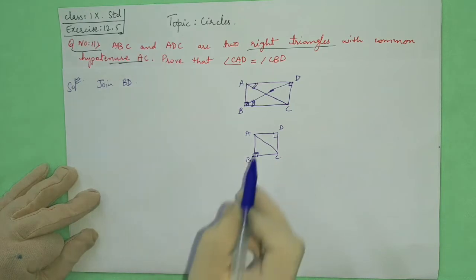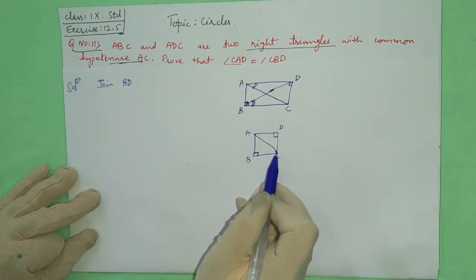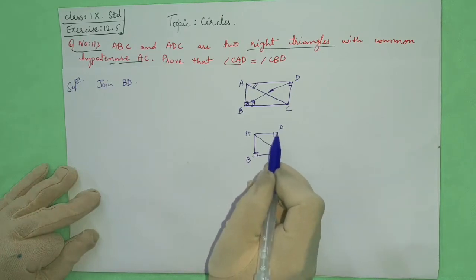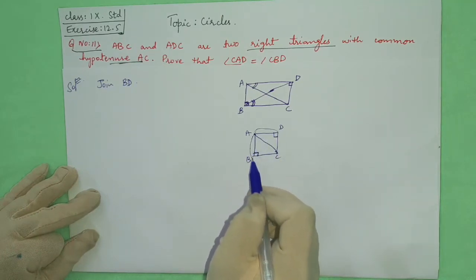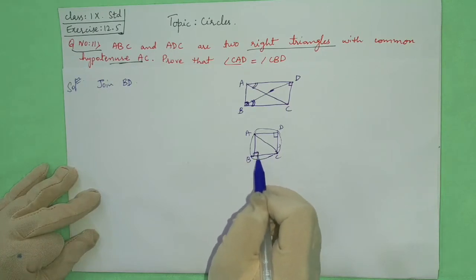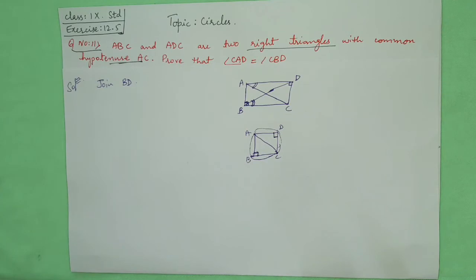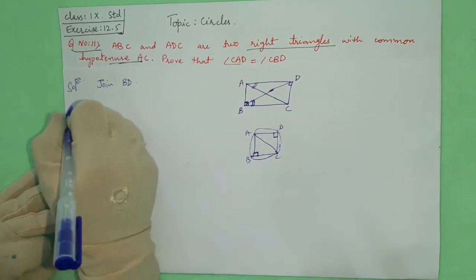It means the points will lie on a circle. If we draw AC as diameter, these four points will lie on a circle. Definitely they will lie on a circle. Why? Because the angle in a semicircle is always 90 degrees. So what we are taking in the solution.